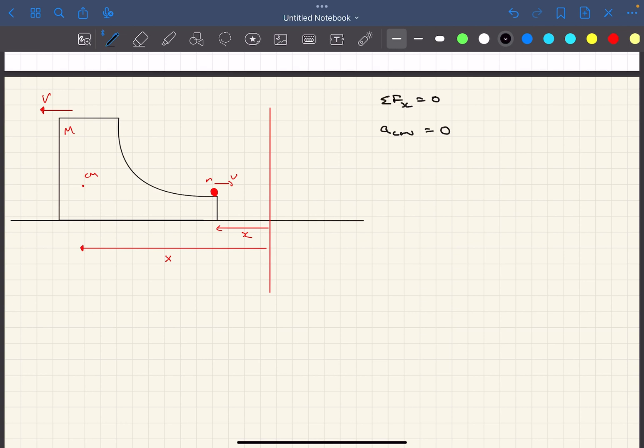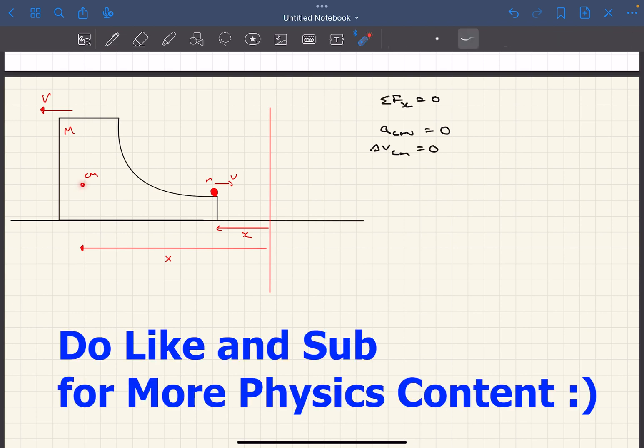As the acceleration of the center of mass is 0, we can say delta v of center of mass is 0. So the velocity of the center of mass will not change. As the center of mass was initially at rest, it means that finally also it should be at rest.